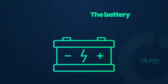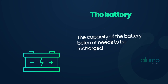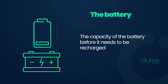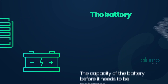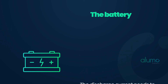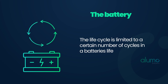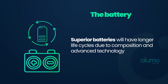Lastly, we need to consider the battery. This includes the following: the battery capacity, meaning the size and duration of life of the battery before it needs to be recharged; the discharge current, which needs to be of a certain level in order for you to run all the appliances you desire; and the battery life cycle, which is limited to a certain number of cycles in a battery's life. Better batteries will have longer life cycles due to battery composition and more advanced technology of certain manufacturers.